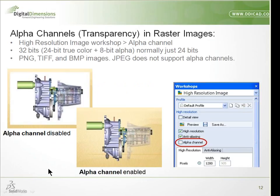Alpha channel transparency is now supported in raster images — meaning the High Resolution Workshop. You can save image files with the alpha channel built in, using 24-bit color plus an 8-bit alpha channel. This is useful for tech illustration — for example, embedding a Composer image into PowerPoint with a transparent background. Turn on the alpha channel and save as PNG, TIFF, or Bitmap format and the alpha channel will come through. Note that JPEG doesn't support alpha channels as it was mostly designed as a web format.